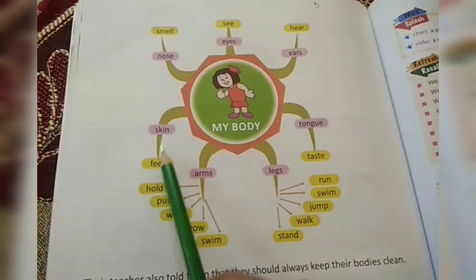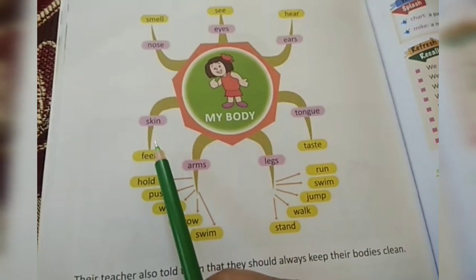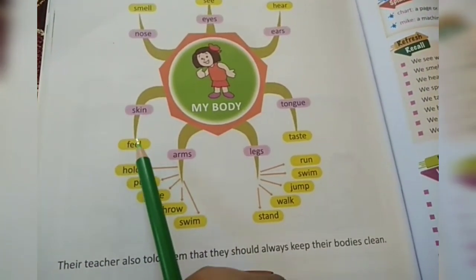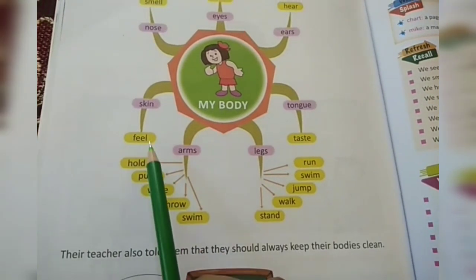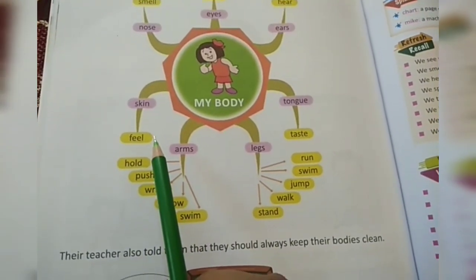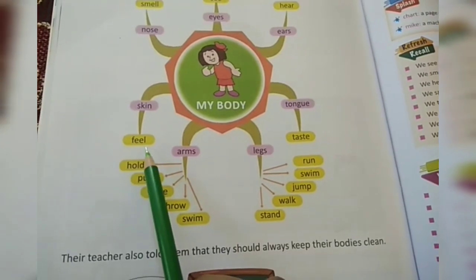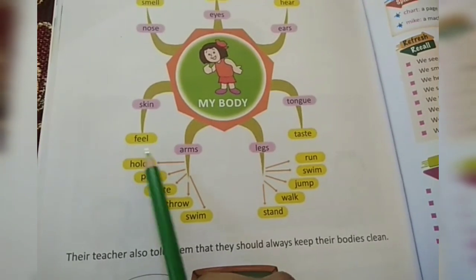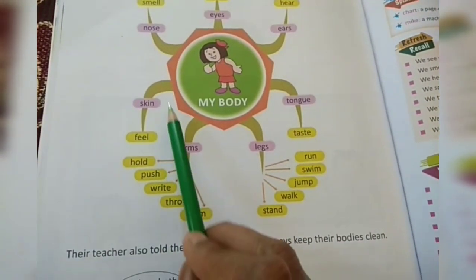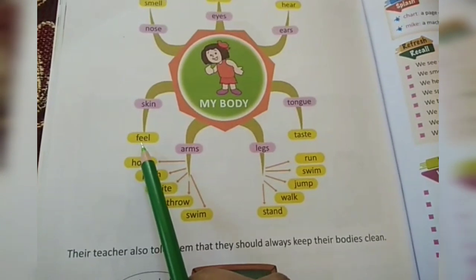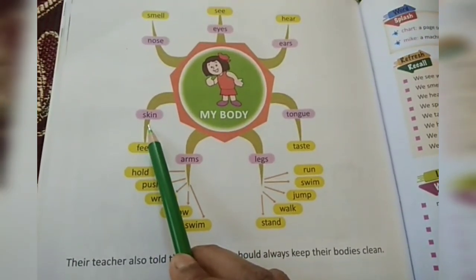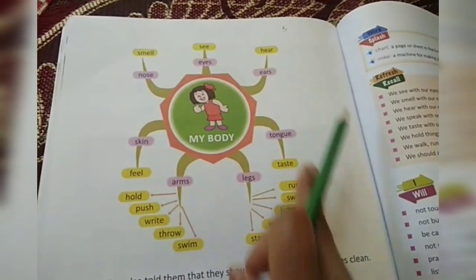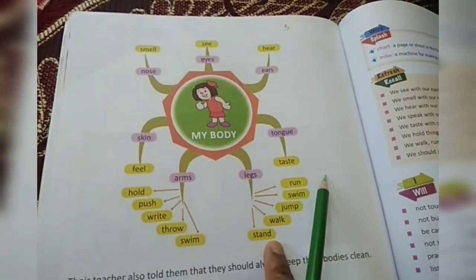Skin — we can feel with our skin. For example, summer season is going on and if you go outside, how do you feel? You feel very hot. How can we feel it? We can feel it with our skin. These are the functions of the different body parts.